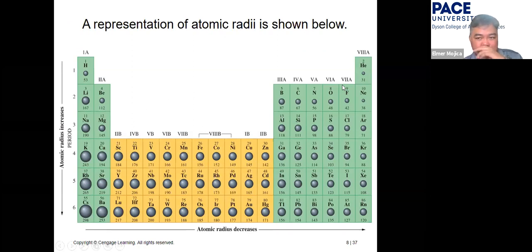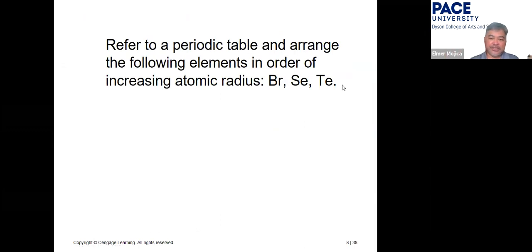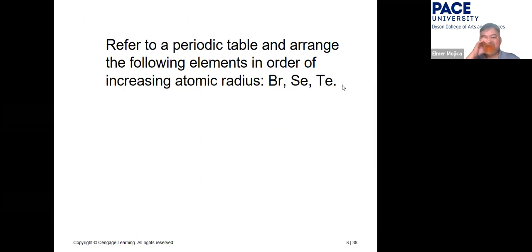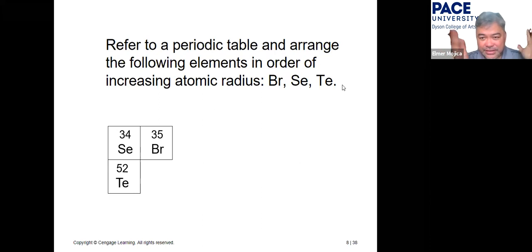The smallest atomic radius is helium at 31 picometers and the largest is cesium at 298 picometers. For exam questions you will be given a set of elements and asked to arrange them by increasing or decreasing atomic radius. Use the periodic table and remember: top to bottom increases, left to right decreases — make this a sure point.